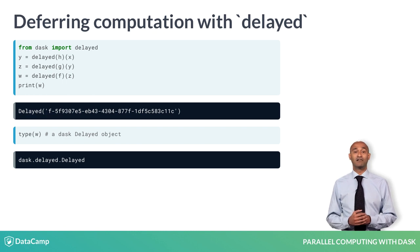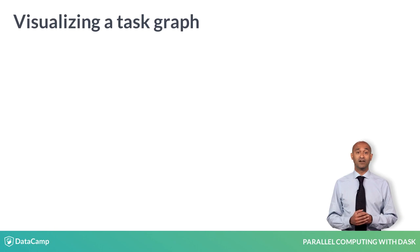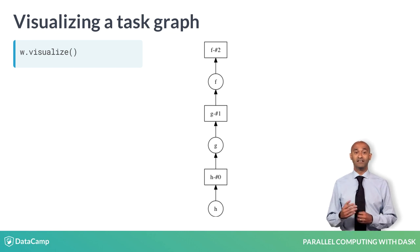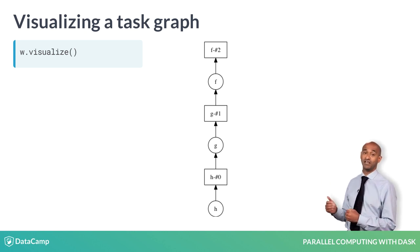The delayed decorator stalls computation until the method compute is invoked. The Dask delayed object has another method, visualize, that displays a task graph in some IPython shells. This linear graph shows the execution sequence and flow of data for this computation.